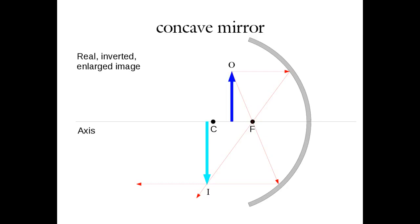For the same concave mirror with the object placed between the center of curvature and the focal point, the parallel ray strikes the mirror and passes through the focal point; the focal ray passes through the focal point, strikes the mirror, and comes out parallel to the axis. The reflected rays converge at a point behind where the object was located. The image is still real and inverted, but now larger than the original object — a real, inverted, enlarged image.